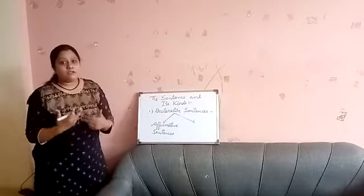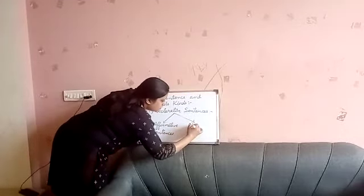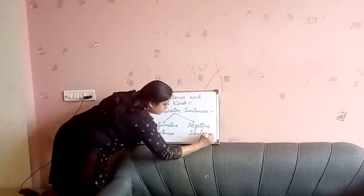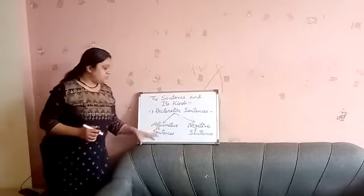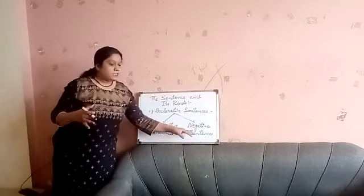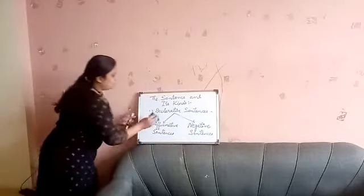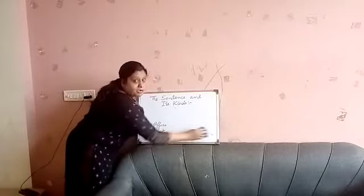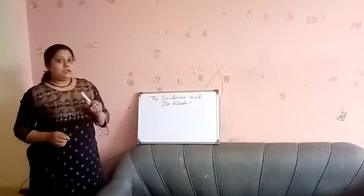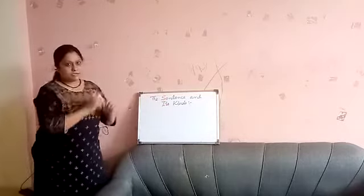Negative sentences: when there is a sign of negativity in the sentence, they are called negative sentences. So basically, we can divide declarative sentences into two categories: affirmative — general sentences with positive notions — and negative sentences with a sign of negativity. For example, 'He is a smart boy' is an affirmative declarative sentence, while 'He did not complete his work' is a negative declarative sentence.